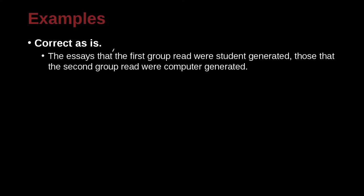The essays that the first group read were student-generated; those that the second group read were computer-generated. This is a little confusing because it feels like you want to put a comma here, but no — because if you try to cut something out, the sentence meaning changes. The essays that the first group read — this piece 'that the first group read' — we cannot take that out because it's specifically this group.